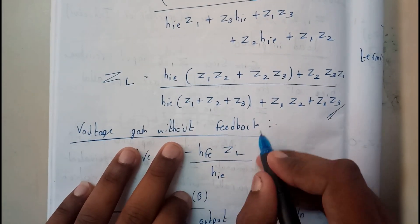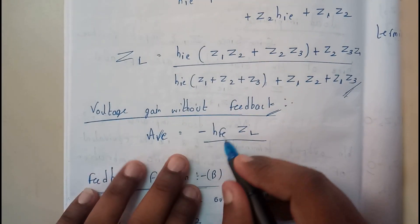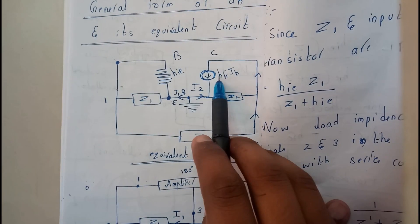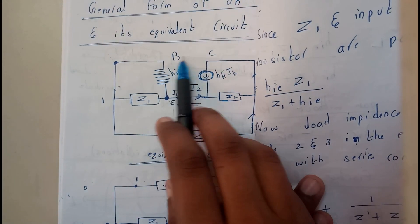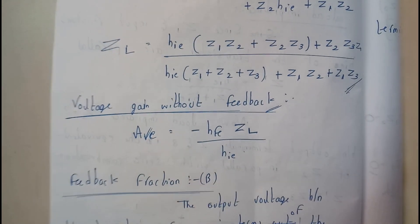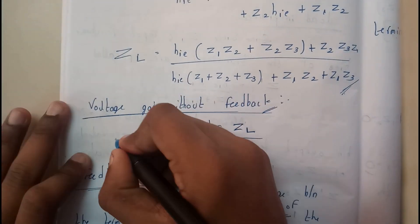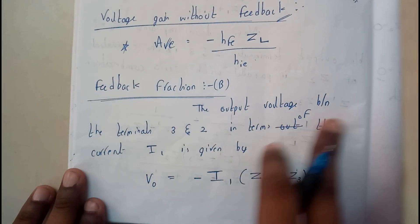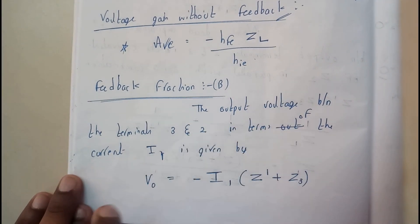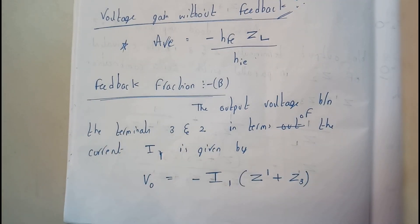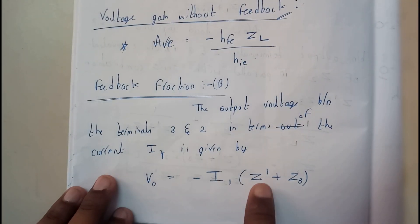The voltage gain without feedback, AVE, is nothing but minus HFE·ZL divided by HIE. Assuming the load is placed at that node, AVE equals minus HFE·ZL by HIE. This is an important formula you need to remember. For the feedback fraction, the output between terminal 3 and 2 in terms of current I1: the output voltage V0 equals minus I1 times (Z1 plus Z3).